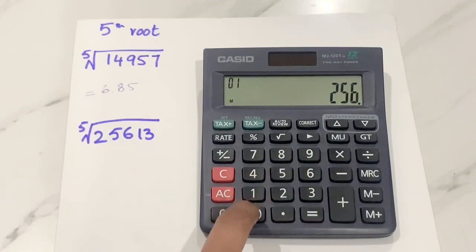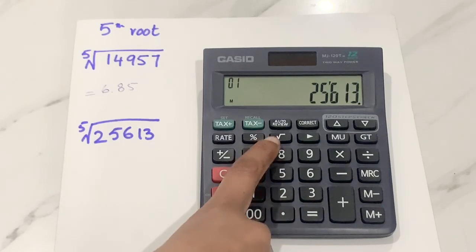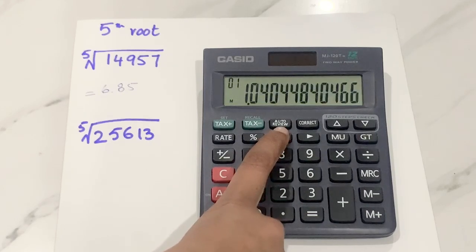25,613. Then I will press the under root sign 12 times. 1, 2, 3, 4, 5, 6, 7, 8, 9, 10, 11, 12.